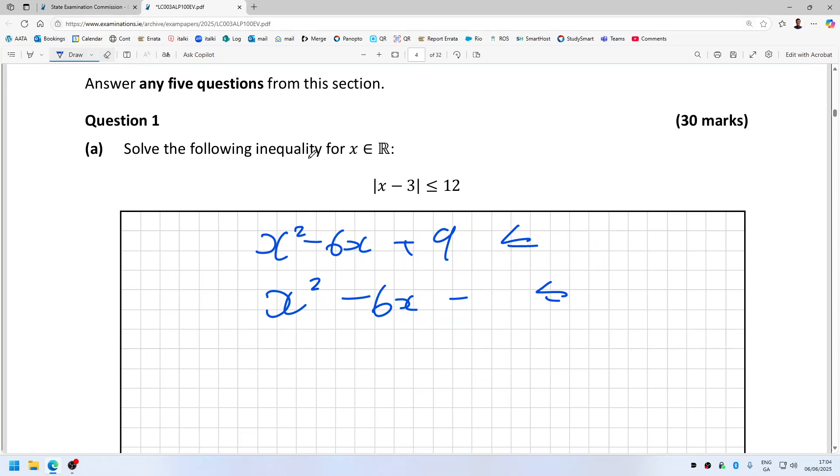Got the squared right hand side. I'm in too much of a rush. Don't panic Steven, you can do this. 9 minus 144, that's minus 135. And then we can factorize this as (x minus 15)(x plus 9) less than or equal to zero.